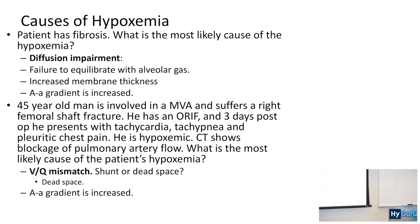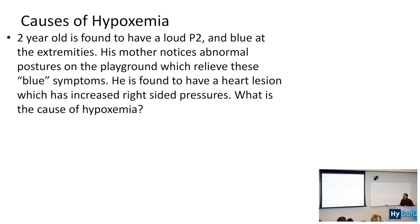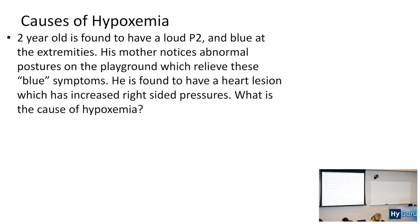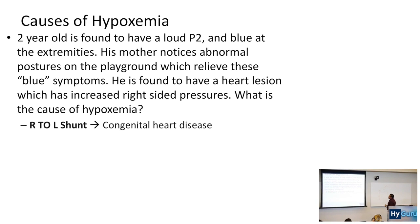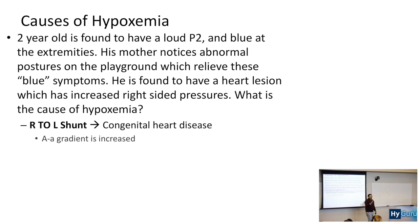A two-year-old is found to have a loud P2 and is blue at the extremities — squatting relieves the blue symptoms. He is found to have a heart lesion with increased right-sided pressures. What is the cause of the hypoxemia? That is going to be tetralogy of Fallot — a right-to-left shunt, which is another cause of hypoxemia. Is the A-a gradient elevated? Yes, the A-a gradient is increased. So we've talked about diffusion impairment, VQ mismatch, and right-to-left shunt — these are the causes of hypoxemia that increase your A-a gradient.